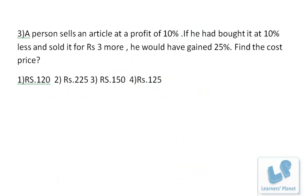Here's one more profit and loss problem. A person sells an article at a profit of 10%. That means SP by CP is 1.1, or we can say 11 by 10, so the SP to CP ratio will be